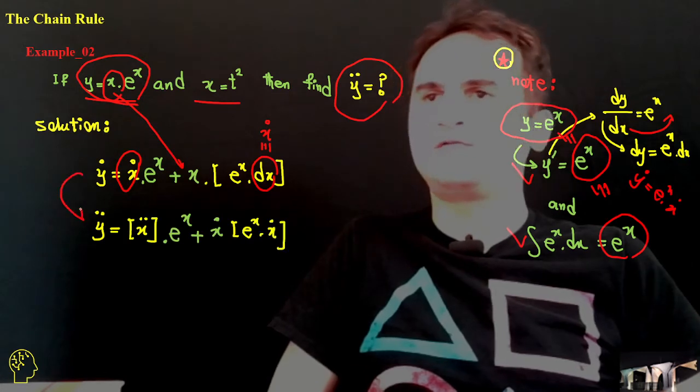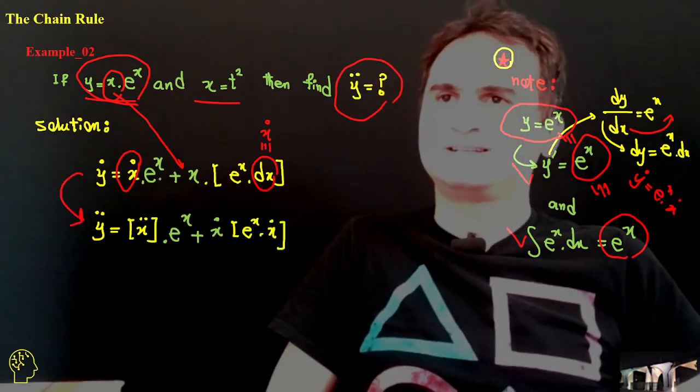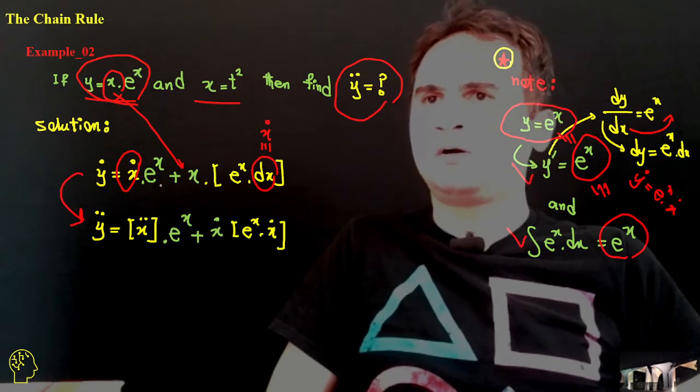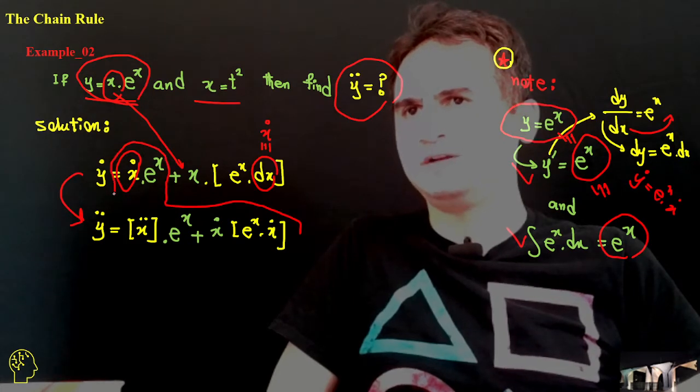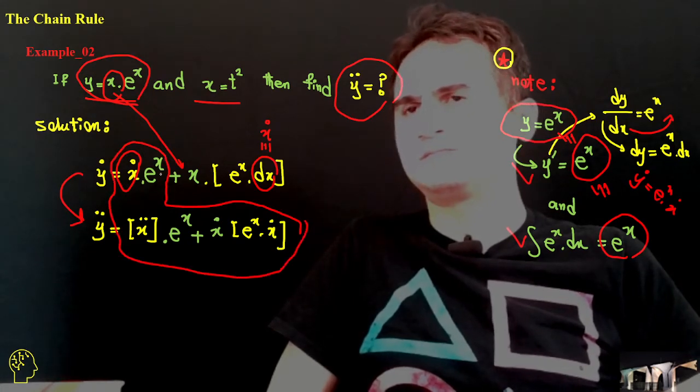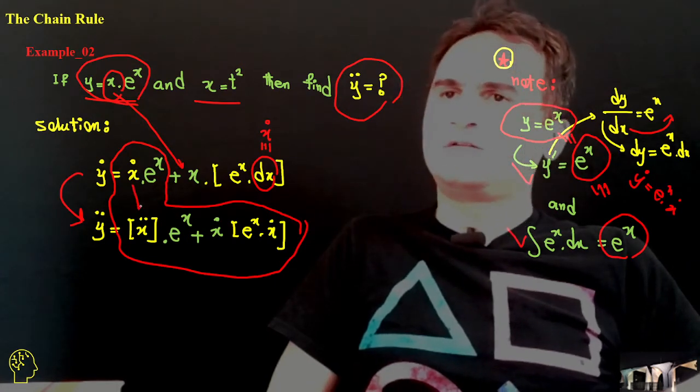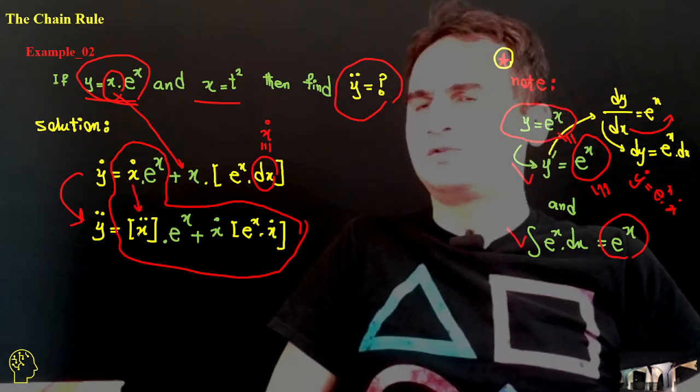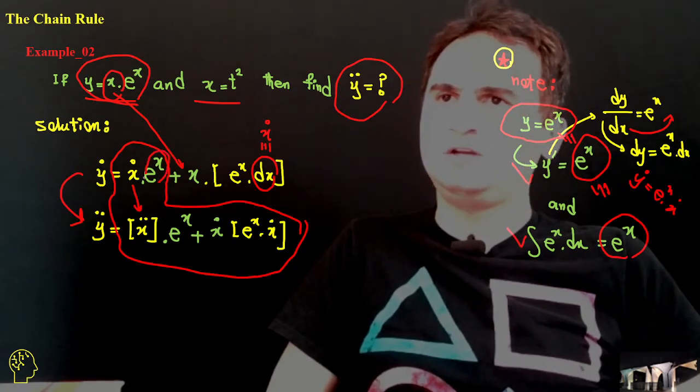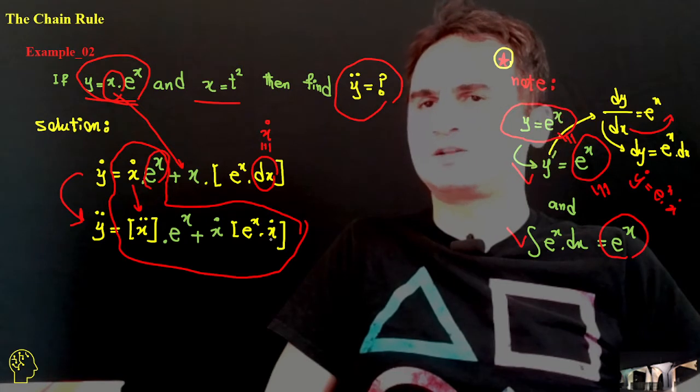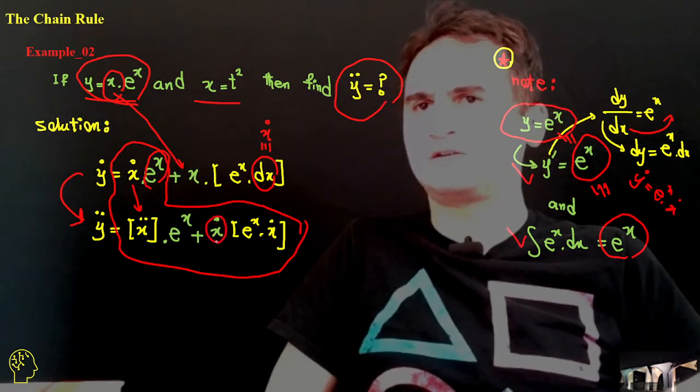And if you derivate it once more to get y double dot, that's, let's do it part by part. So first of all, just consider the first part here. Derivation of this part, x dot, is going to be x double dot times e to the x, plus this time the derivation of e to the x is e to the x times x dot times the constant of x dot.